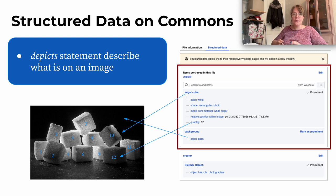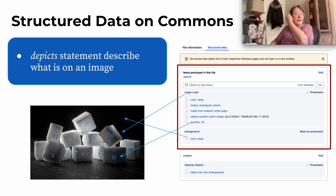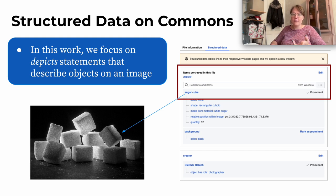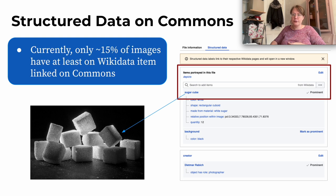Specifically in our work, we look at depict statements. Depict statements describe things that are on an image. For example, I highlighted the sugar cubes, the number of sugar cubes, the color of the background, that there is a background and what color it has. We specifically focus on the depict statements that describe objects on an image — directly describing things that you can see — for example, in that case, the sugar cubes.